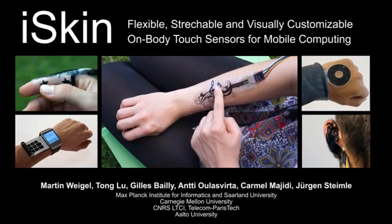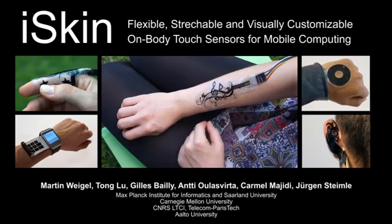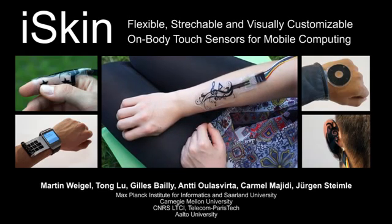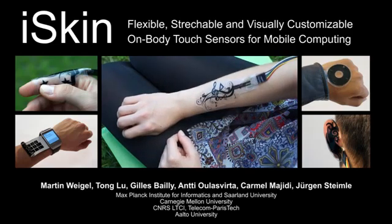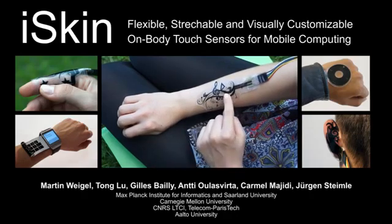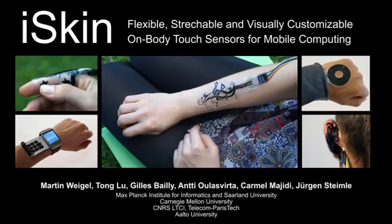In this video we presented iSkin, a skin-worn touch sensor. It is thin, flexible, stretchable and visually customizable. iSkin enables new forms of on-body input for a wide range of application scenarios in mobile computing.